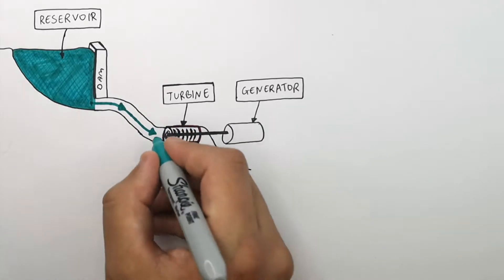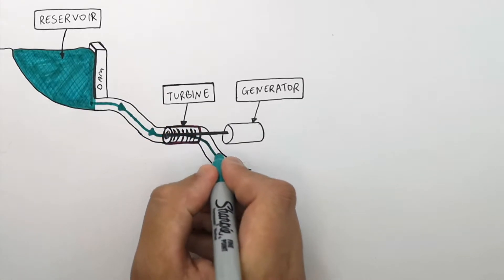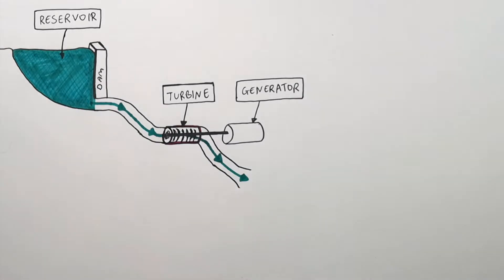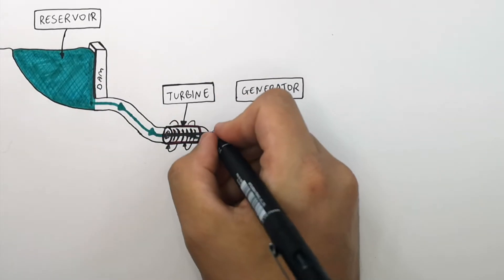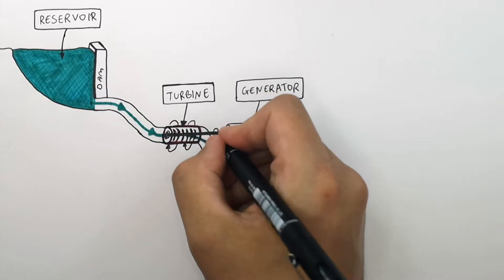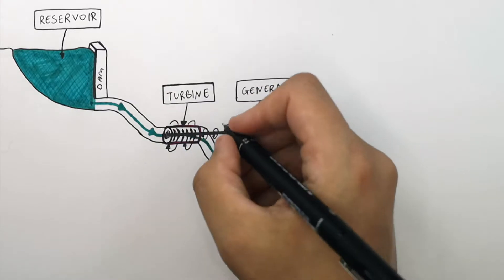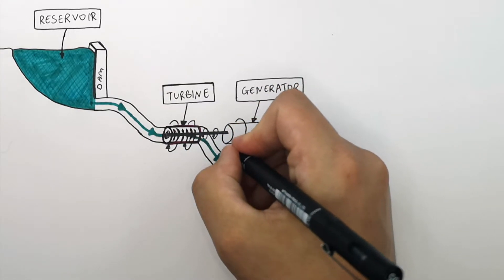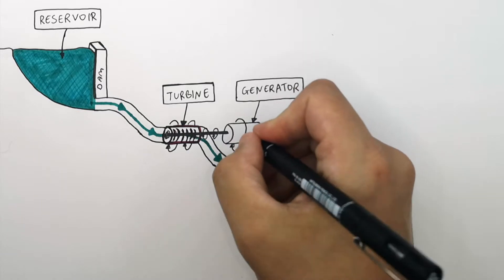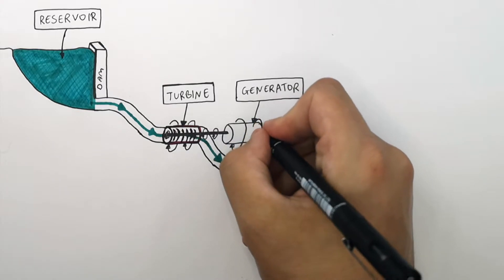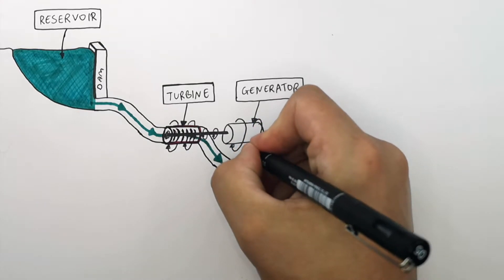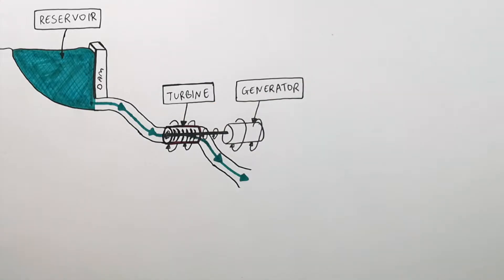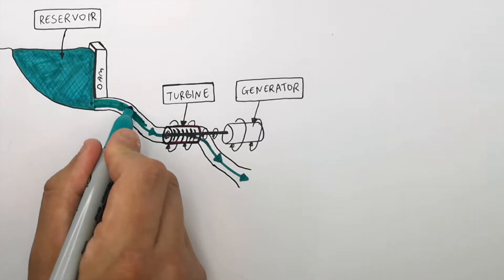The water's kinetic energy is in turn transferred to the kinetic energy store of the turbines. The turbine rotates, which causes the transfer of energy from the turbine's kinetic energy store to the generator's kinetic energy store. This then causes an electrical current to be generated by the generator, which is connected to the grid.